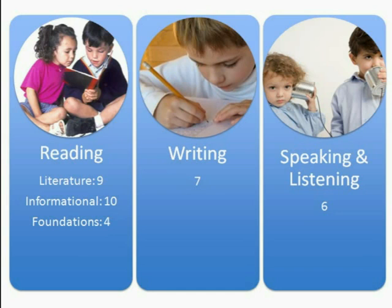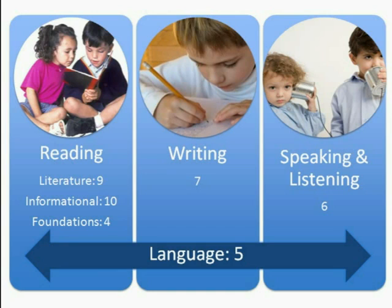Writing has seven standards for grade 1, and speaking and listening has six. The language strand crosses all other areas—reading, writing, listening, and speaking—because the developers put things such as knowledge of conventions of grammar, spelling, and other parts into a broad band meant to always be in support of the other strands. In total, there are 41 standards for grade 1 across all these areas.